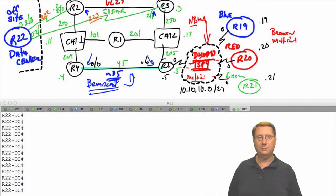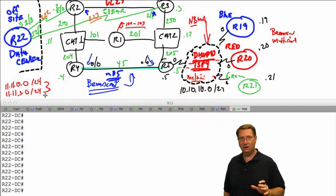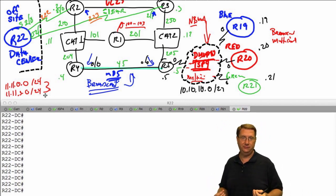In order to walk through this, I'm going to go to R1 and create a series of loopback interfaces from LO100 all the way to LO103. They will have an IP address range of 11.11.0.0/24 all the way to 11.11.3.0/24. We're going to advertise those on R1 and then look at exactly what we'd expect to happen in our environment, tracking these particular prefixes.